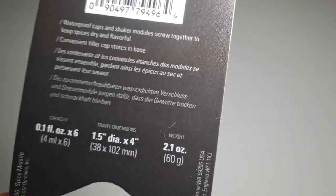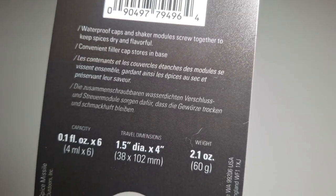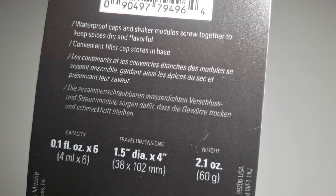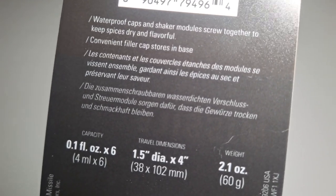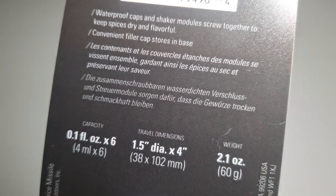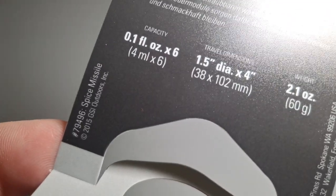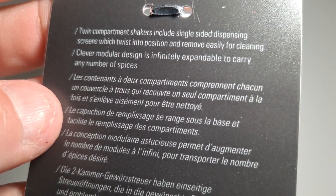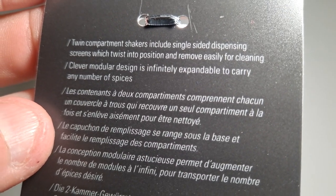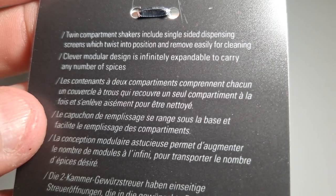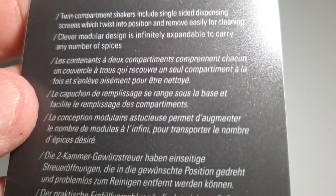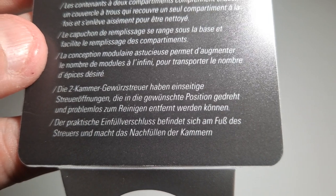Waterproof. Let me take that out so you can see this. Waterproof caps and shaker modules screw together to keep spices dry and flavorful. Convenient filler caps store in base. Twin compartment shakers include single-sided dispensing screens which twist into position and remove easily for cleaning. Clever module design is infinitely expandable to carry any number of spices. Well, it'll carry six.